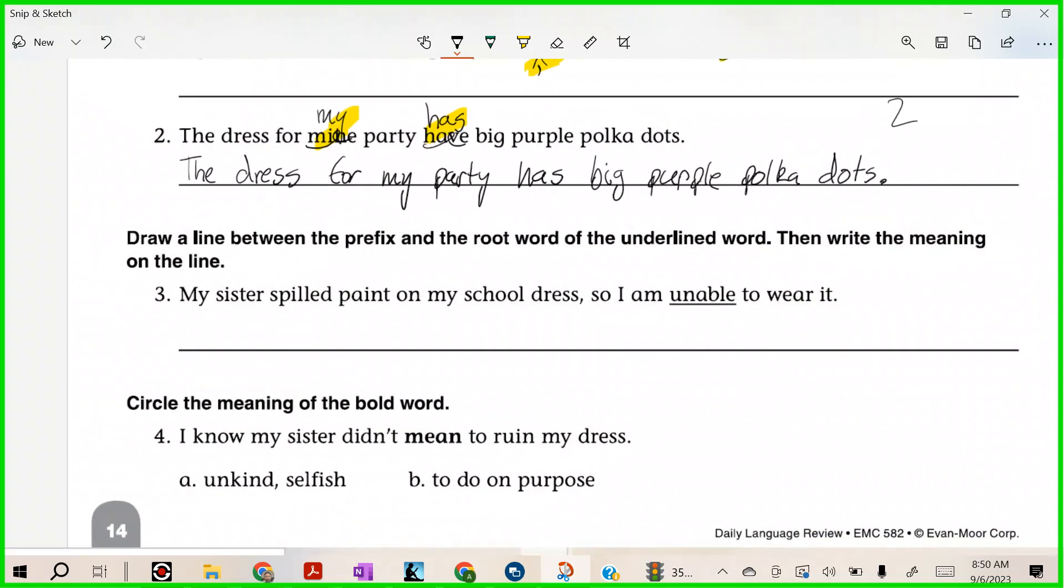'My sister spilled paint on my school dress, so I am unable to wear it.' Alright, who was able to dissect this word? Who could tell me what the prefix is and the root word is in 'unable'? I should see a bunch of hands up. Let's see, Chevy, go ahead.